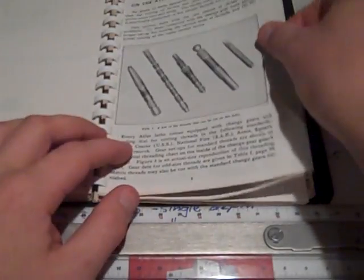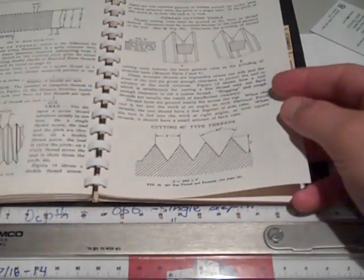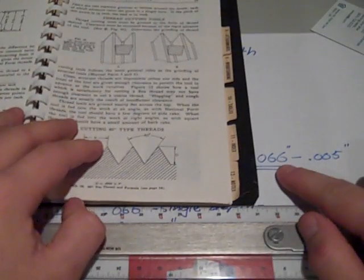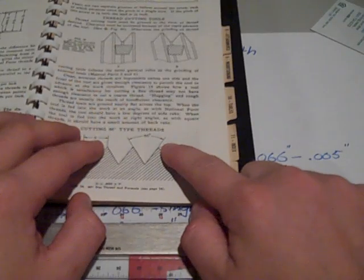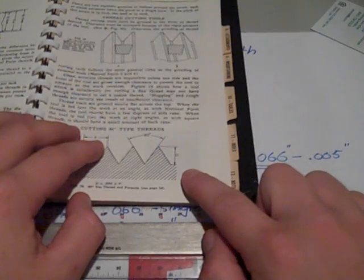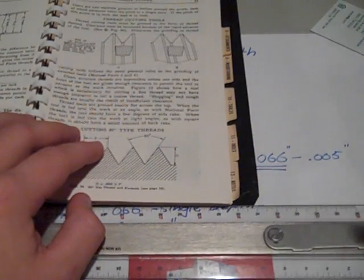Again, this 0.066 is basically when you touch your tool off, when you move it over 66 thousandths, you should be done with your thread.